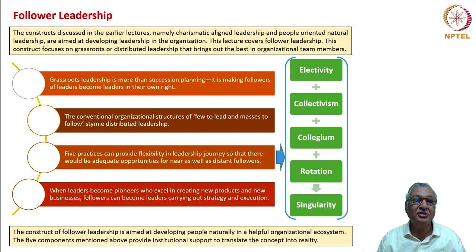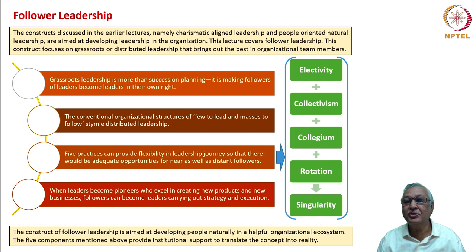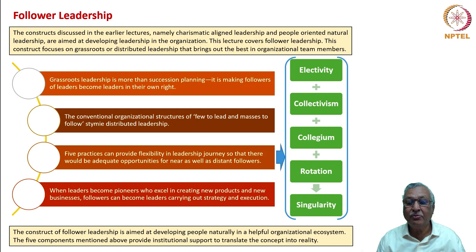This lecture is a logical extension of the previous two lectures. Grassroots leadership is more than succession planning — it is making followers of leaders become leaders in their own right. The conventional organizational structures of few to lead and masses to follow have stymied distributed leadership. Five practices — electivity, collectivism, collegium, rotation, and singularity — can provide flexibility in the leadership journey so that there are adequate opportunities for near as well as distant followers.